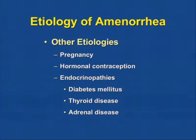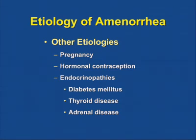Other etiologies for amenorrhea include pregnancy, which is the number one cause of secondary amenorrhea. Hormonal contraception, particularly Depo-Provera, may delay return of regular menses by 6 to 12 months after stopping. Endocrinopathies including diabetes, thyroid disease, Cushing's disease, and congenital adrenal hyperplasia (21-hydroxylase deficiency) can also result in amenorrhea.